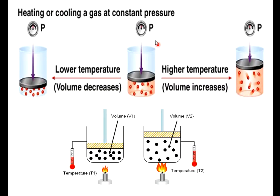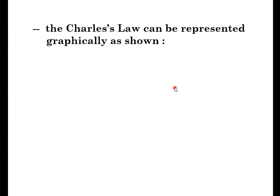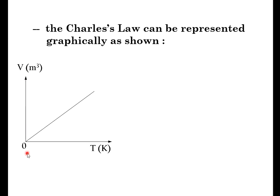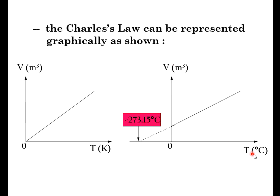In the heating or cooling process, if we reduce the temperature, the volume drops. If at a higher temperature and the gas is allowed to expand, the volume will increase in order to maintain constant pressure. Charles' Law can be represented graphically as volume in meter cubed versus temperature in Kelvin, giving a directly proportionate graph. But if the temperature is in degrees Celsius, volume will be linearly increasing and the x-intercept will be at negative 273 degrees Celsius, at the absolute zero temperature.